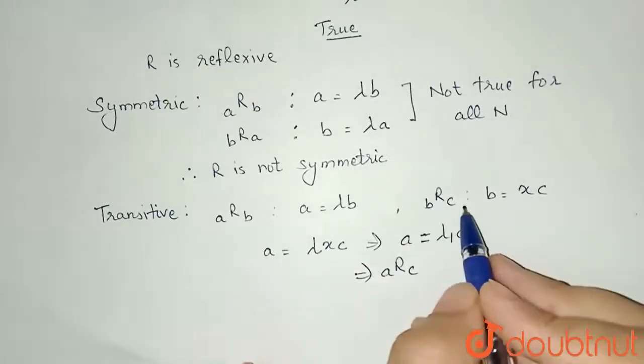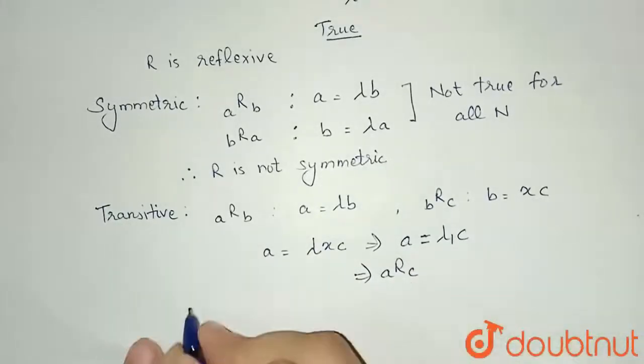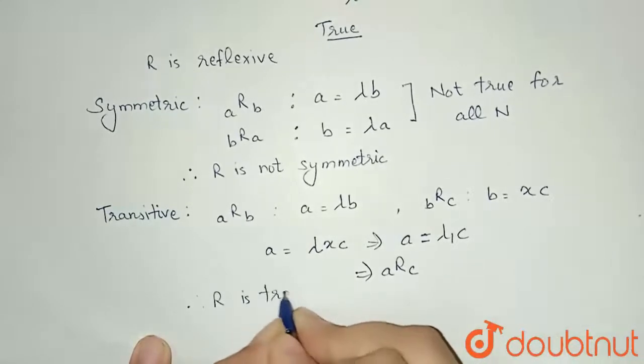So I have taken a related to b, b related to c, I am writing a related to c. Therefore my relation R is transitive.